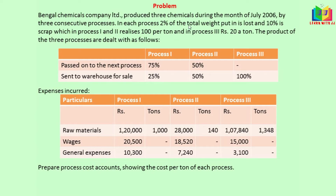There are 3 processes for this product manufacture. Over each process, 2% weight loss occurs. There is also a sale of scrap — 10% over each process comes as loss.